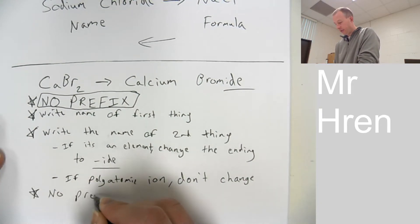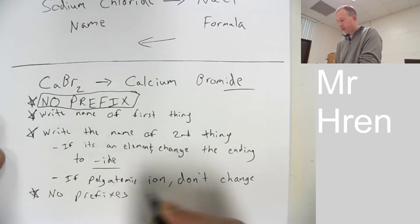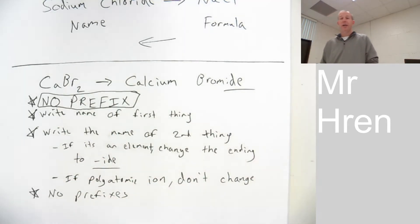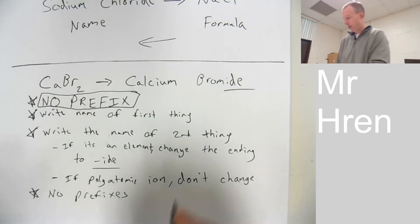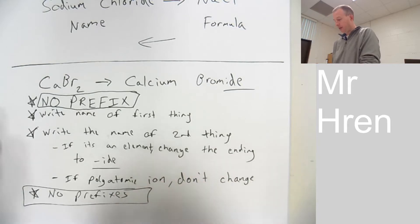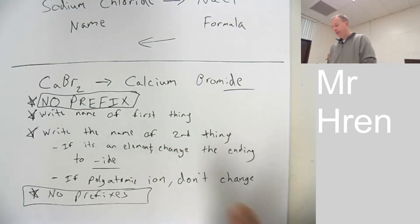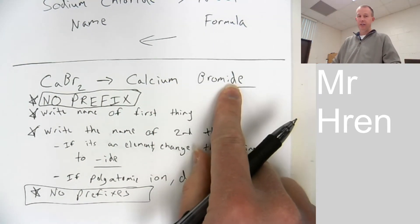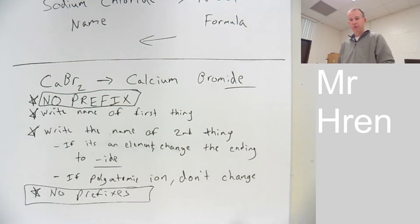No prefixes. Just because you see a 2 there, you're going to want to write calcium dibromide. You're going to want to put dibromide in there because it's like what you think of with the covalent stuff. You do not do that ever with ionic compounds. So, in ionic compounds, no prefixes. It's as simple as write the name, change the ending, done. That's it. Nothing more to it.